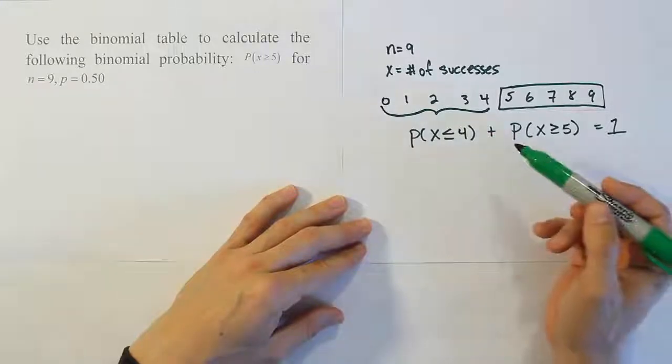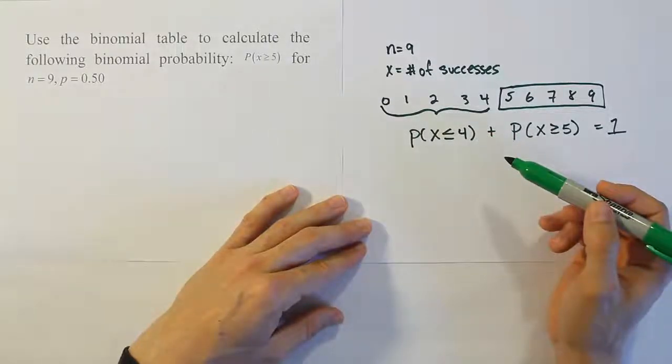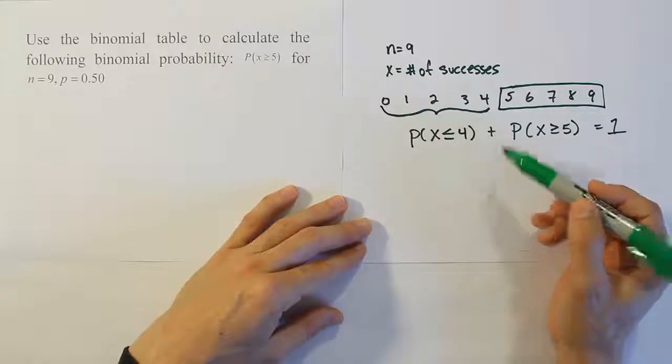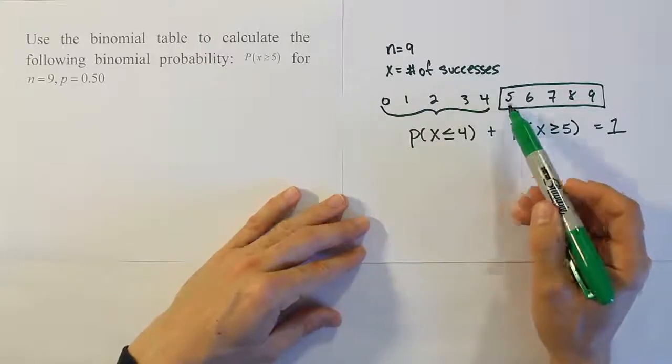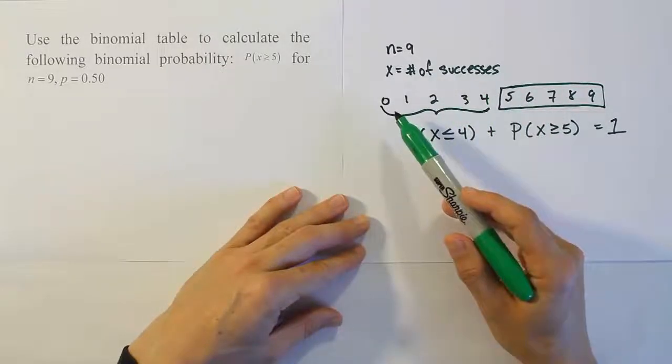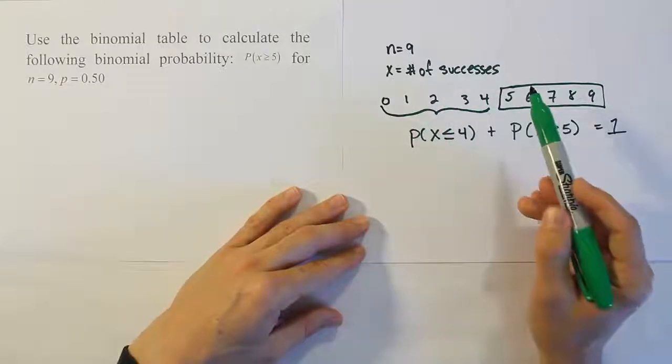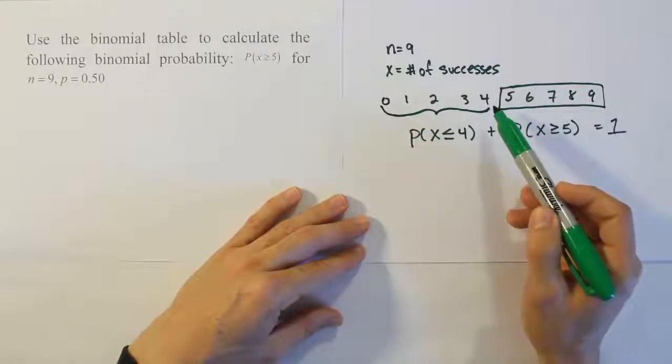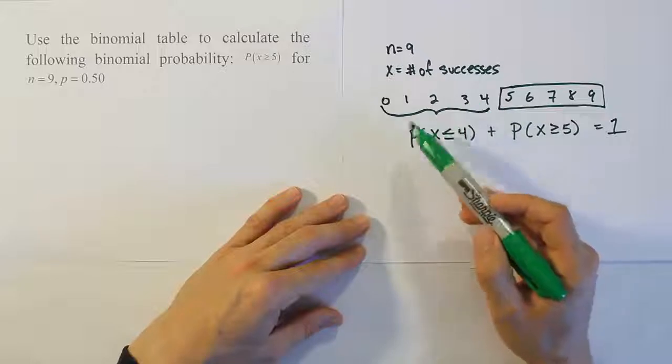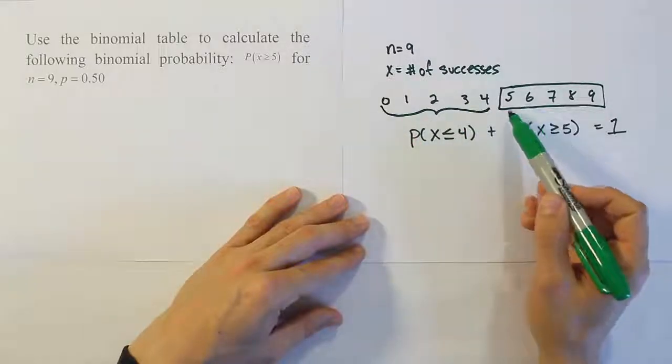The reason why this relationship is important is because my table is not intelligent. It doesn't know what you want from it. It just answers one question only. If I go to the table and look up 5, the way the table works is it would give me from 5 to 0 all the probability. It would give me the probability of 5 plus the probability of 4 plus the probability of 3, 2, 1, 0.